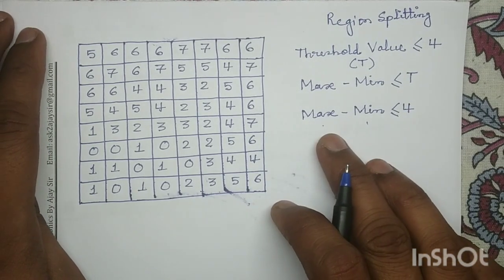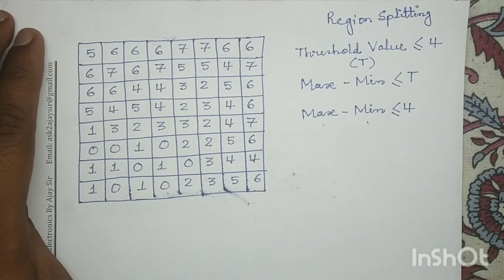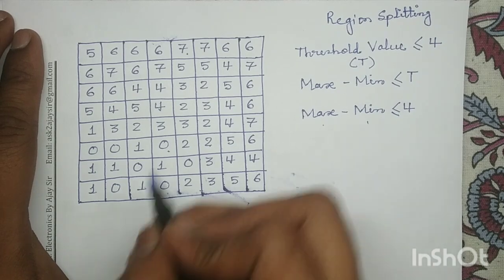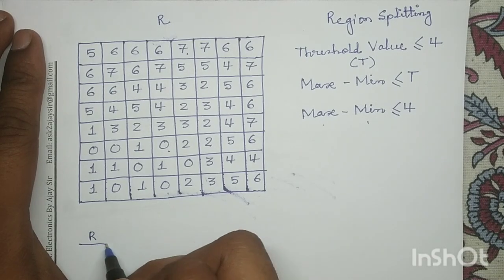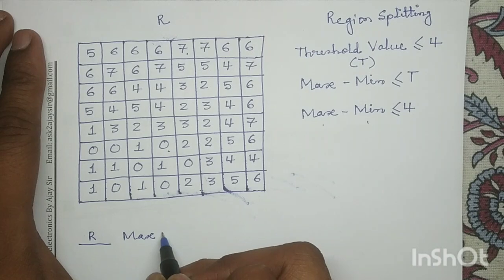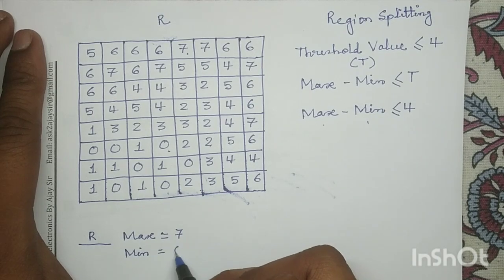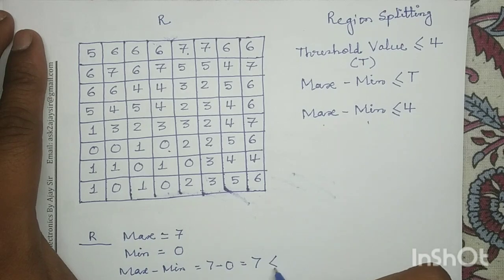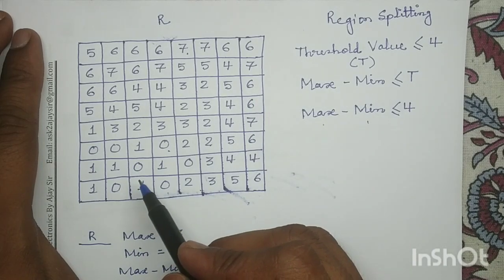First, we will check this homogeneity condition for the entire image. For this entire image, the maximum value is 7 and the minimum value is 0. Let's call this complete region R. For region R, maximum minus minimum is 7 minus 0, which equals 7. It does not satisfy the homogeneity condition — 7 is not less than or equal to 4. So we will split this region R into 4 quadrants.